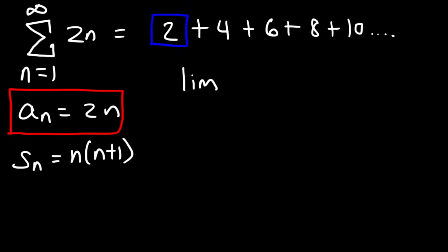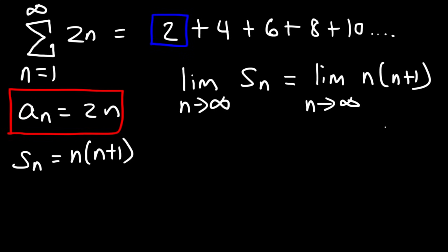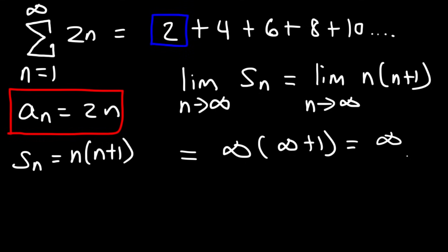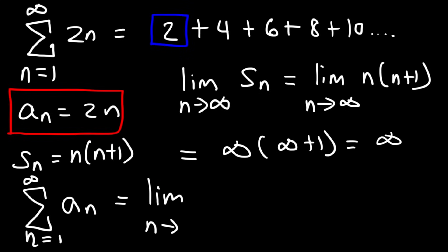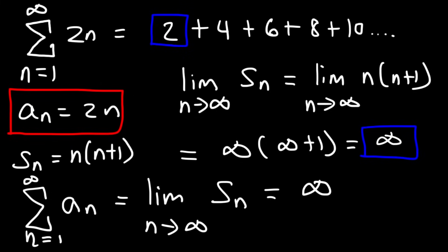Now take the limit as n approaches infinity of s sub n, which is n(n+1). Infinity times (infinity plus 1) — a large number times a large number gives an even larger number — so this equals infinity. The infinite series equals the limit as n approaches infinity of s sub n, which is infinity, so it doesn't equal a finite number. Therefore the series diverges.